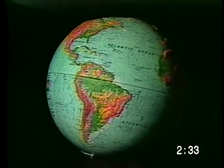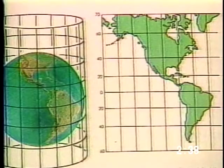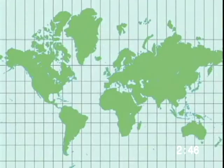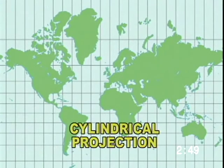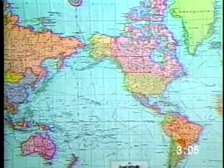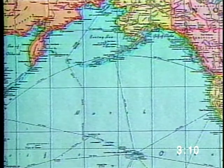Another type of projection is prepared by wrapping a cylinder of paper around the globe. Again, where the paper touches the globe, there is little distortion. The distortion mostly occurs towards the outer edges of the paper. Probably the best known cylindrical projection is a Mercator map. The areas near the equator are very accurate, but the distortion at the poles is very evident. The sizes of Greenland and Antarctica are extremely exaggerated. This map was designed for navigation, and the true compass direction between any two points can be determined by a straight line.